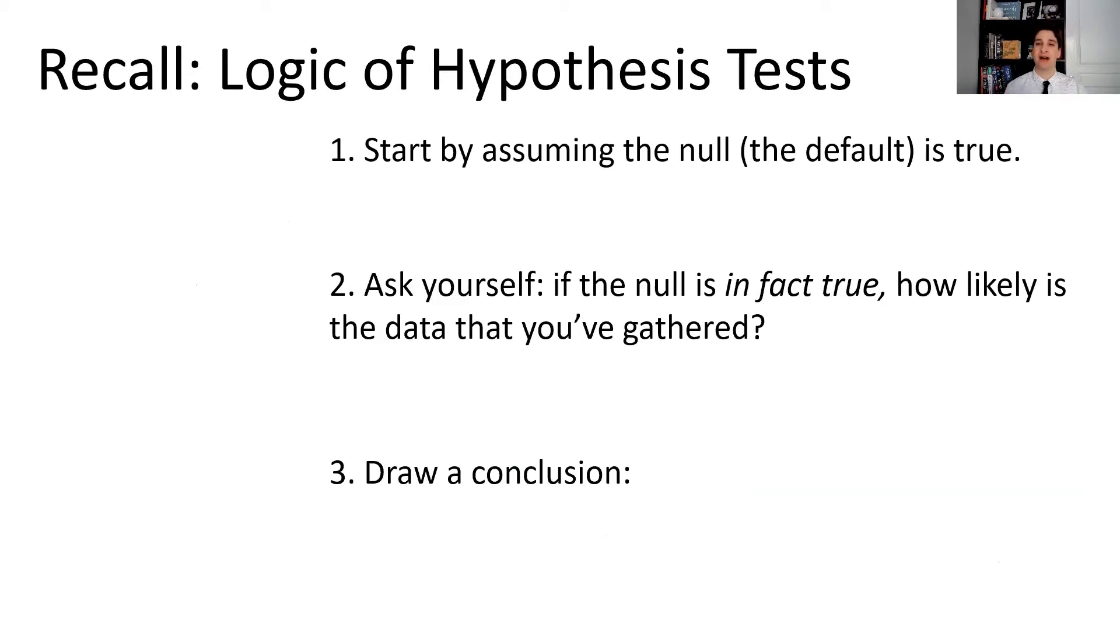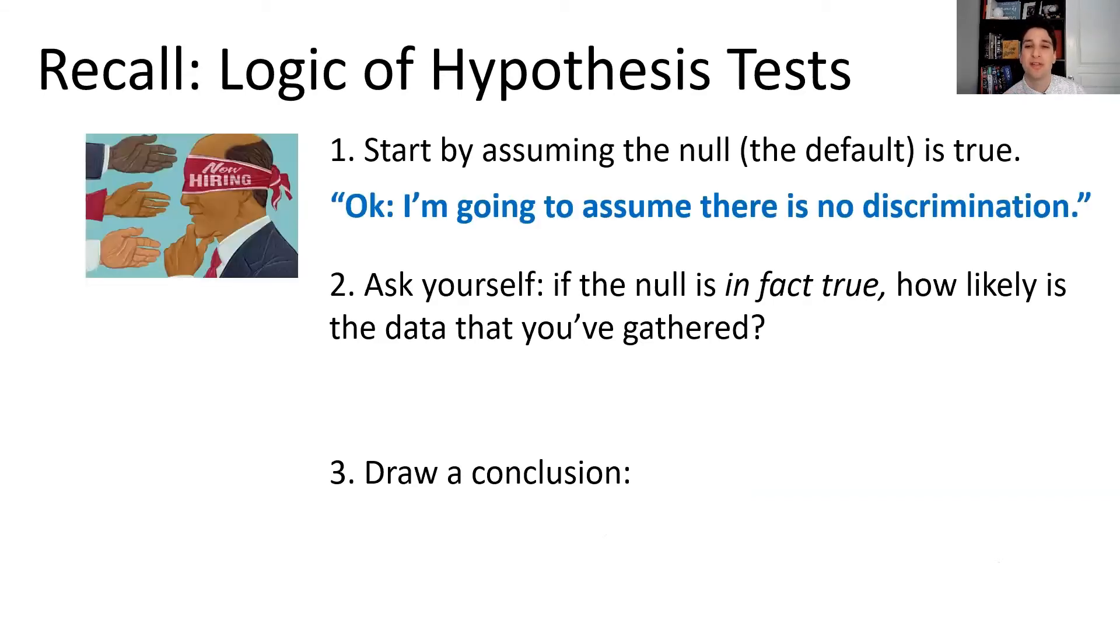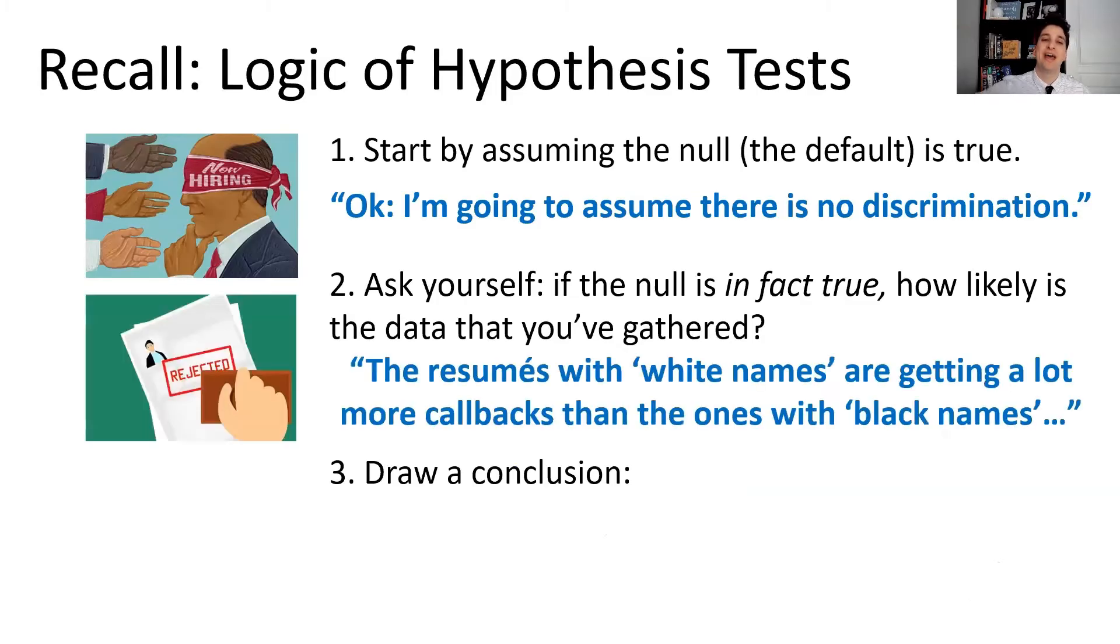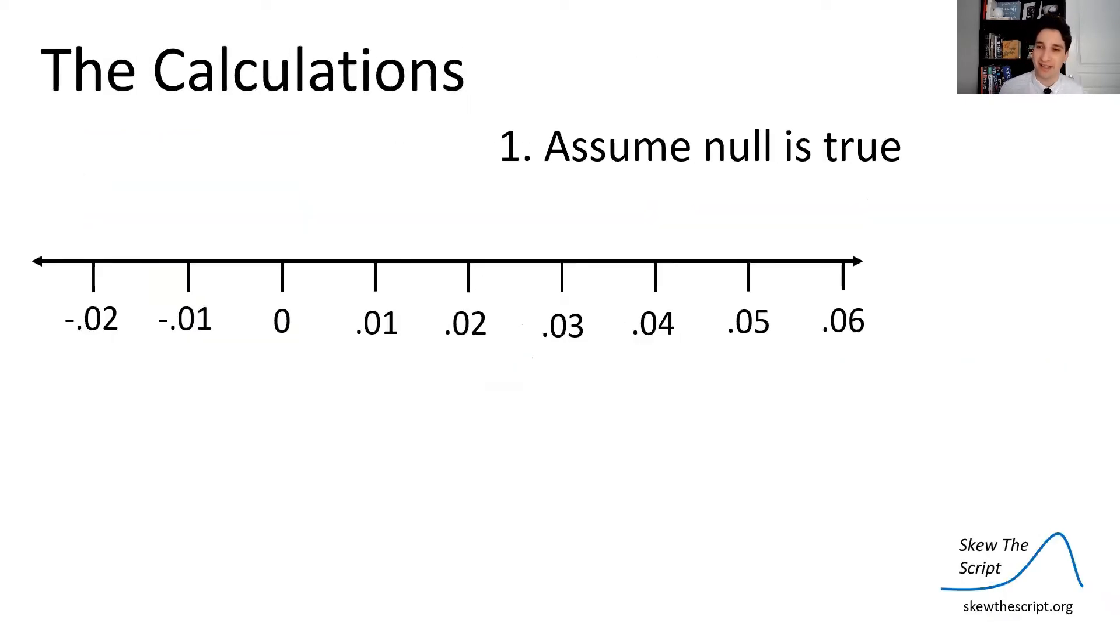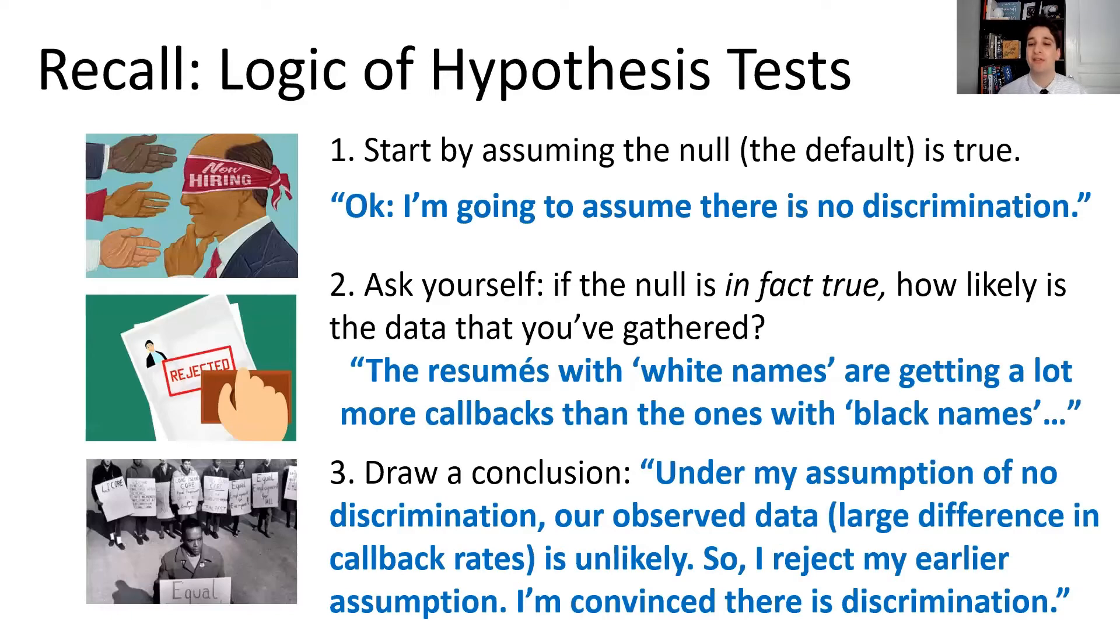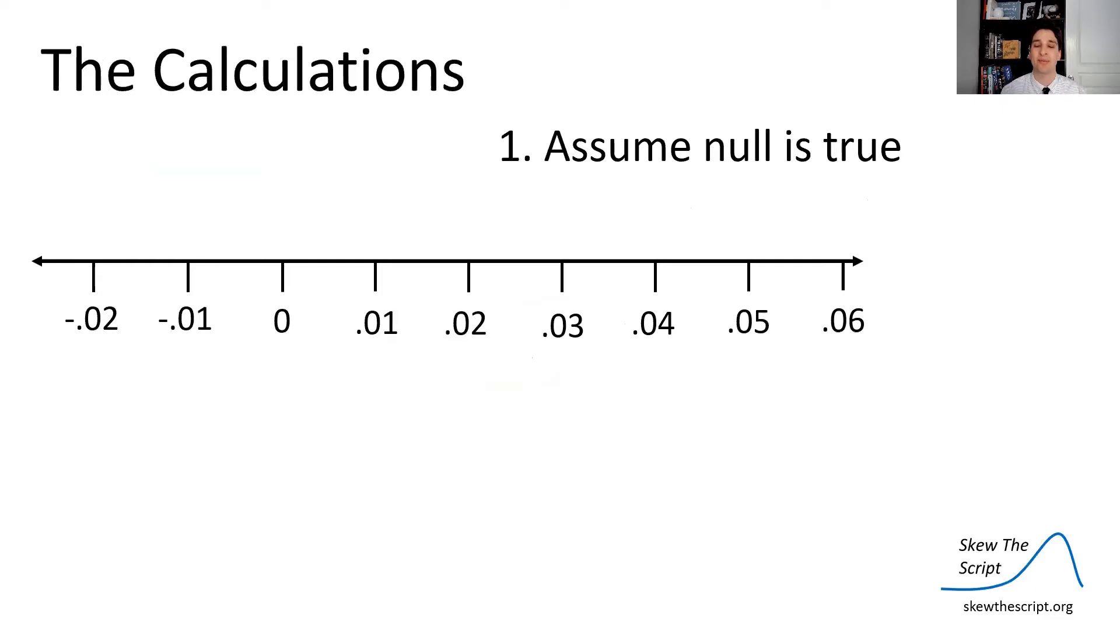So now let's go through the logic of hypothesis tests. Recall this is what we do. We start by assuming the null, the default, is true. So I'm going to assume there's no discrimination in hiring. I'm going to start by making that assumption. And then I'm going to ask, if the null actually is true, if my assumption is true, how likely is the data we've gathered? So if we saw that the resumes with white names are getting a lot more callbacks than the ones with commonly used black names, then we might start to doubt that assumption. And so we draw a conclusion. Under my assumption of no discrimination, our observed data is unlikely. So therefore, I reject my earlier assumption. I'm convinced that there actually is discrimination in this hiring process.